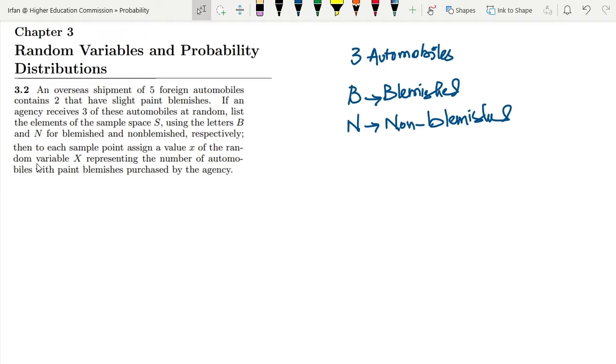Then to each sample point assign a value x of the random variable X representing the number of automobiles with paint blemishes purchased by the agency. So now here we have a random variable X which describes the number of blemished automobiles.